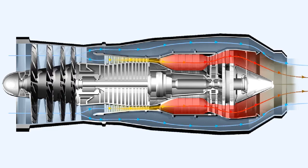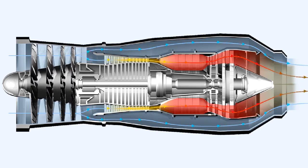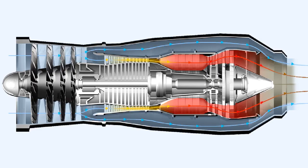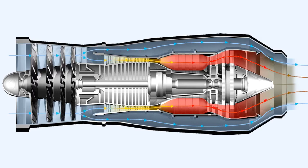During normal engine running conditions, combustion is self-supporting. The ignition system is actually switched off as soon as the engine has attained self-sustaining speed. Self-sustaining speed is the speed at which, after start, the engine can accelerate without the assistance of the starter motor.